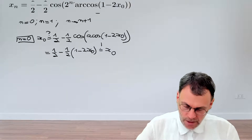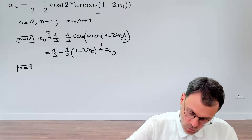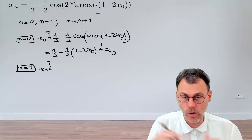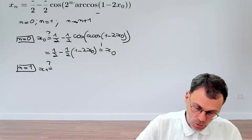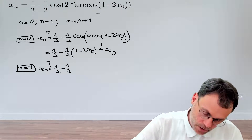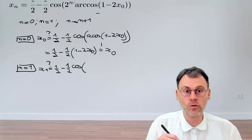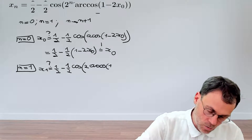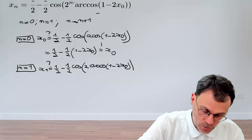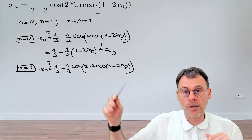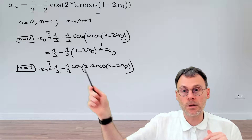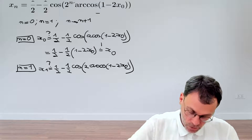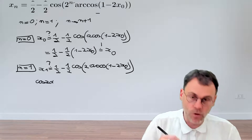As a warm-up for the more complicated case, let's also do n equal to 1. We need to show that applying the formula for n equal to 1 gives us x₁: one half minus one half cosine of two to the power one times arc cosine of one minus two x₀. The cosine and arc cosine can't immediately annihilate because there's a factor of two in front.